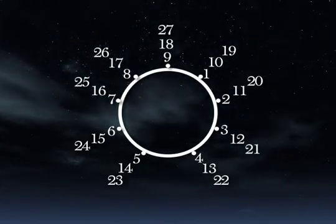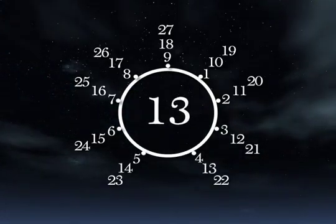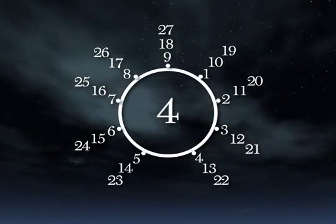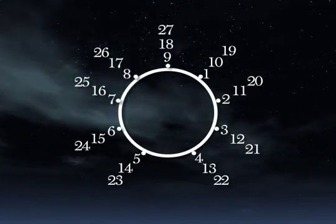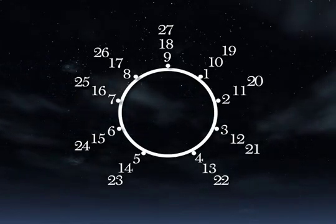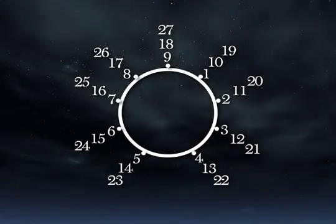In digit sums, 9 behaves like 0. Take any number and add 9 to it. You'll always end up with the same digit sum as you would if you had not added the 9. You can see this at every step on the circle. 2 plus 9 is 11. 11 plus 9 is 20. 20 plus 9 is 29. All of those numbers digit sum back to 2.